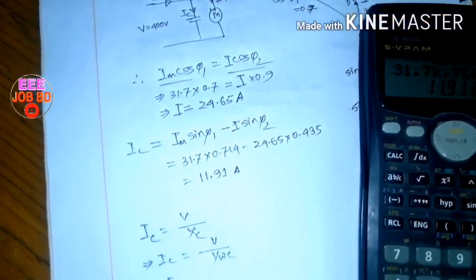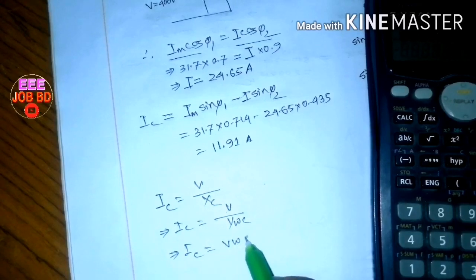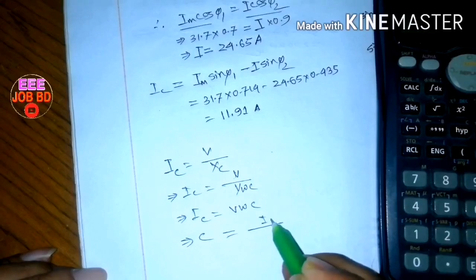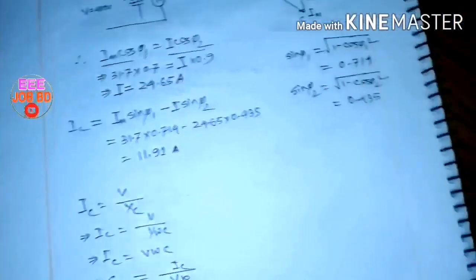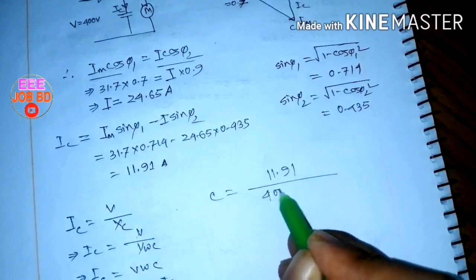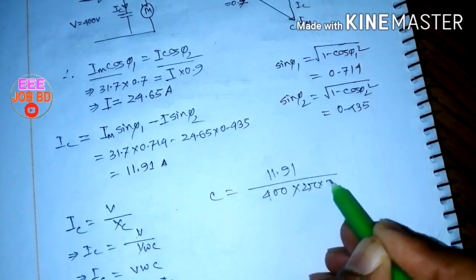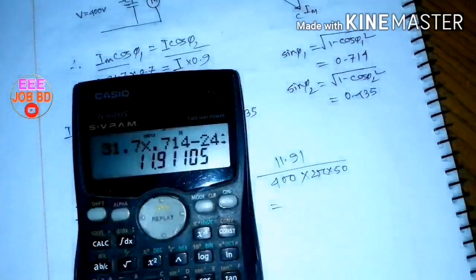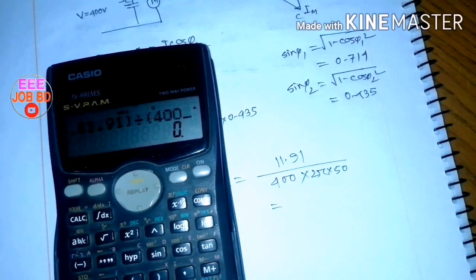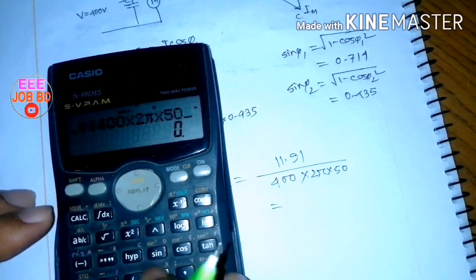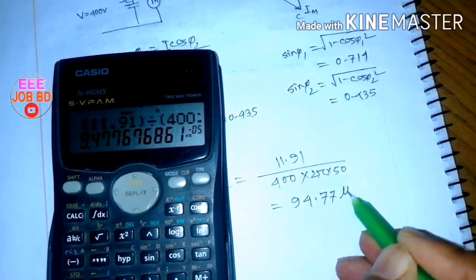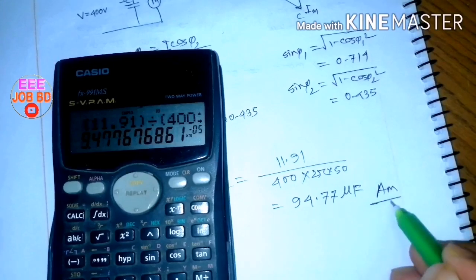IC equals 11.91 amperes. The capacitance is C equals IC divided by V times omega, which is 11.91 divided by 600 times 2 pi times 50. This gives 94.77 microfarads. That is the answer.